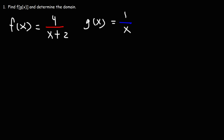Go ahead and find the composite function f of g of x and determine the domain. If we look at the domain for each function individually, we can see that x cannot be equal to 0 for g of x. You cannot have a 0 in the denominator of a fraction — 1 over 0 is an undefined value.